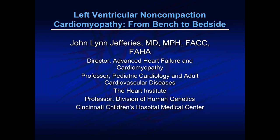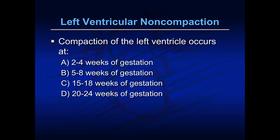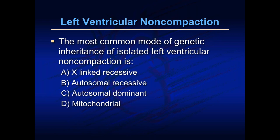I thought we might start out with just a few questions as an educational opportunity, and then we'll dive more into LVNC and try to leave some time at the end for questions. The first question is about why we call this non-compaction. Compaction is a normal process that occurs in embryogenesis, and compaction of the left ventricle occurs at one of these times — keep these numbers in mind. The most common mode of genetic inheritance in left ventricular non-compaction is either X-linked recessive, autosomal recessive, autosomal dominant, or mitochondrial.